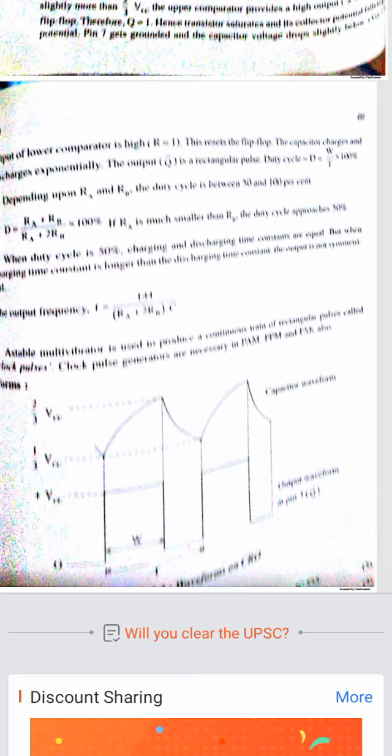Conclusion: An astable multivibrator can be constructed using IC555. Output frequency and duty cycle can be changed by varying Ra, Rb, and C values.